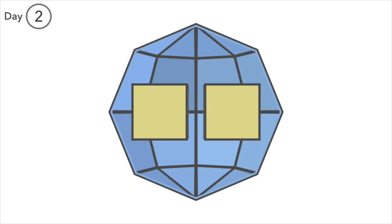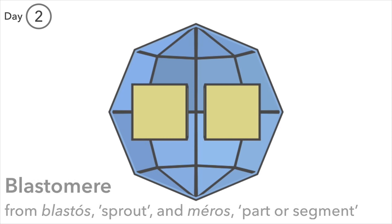Day 2. The first mitotic division of the zygote occurs around 30 hours post-conception, producing two blastomeres. Blastomere means sprout segment, because one blastomere is one segment of the developing human sprout.